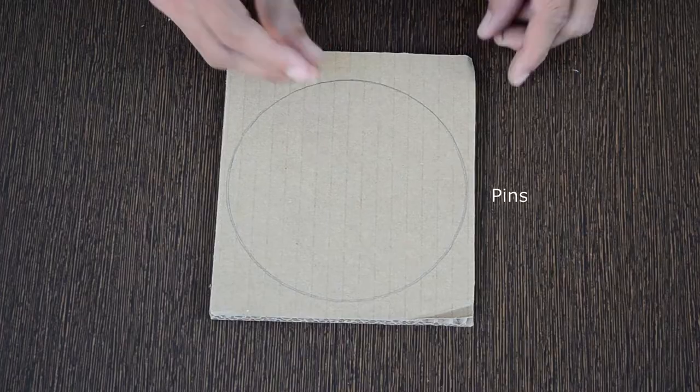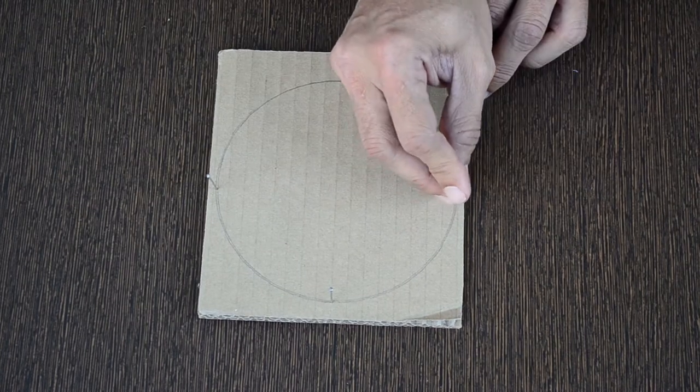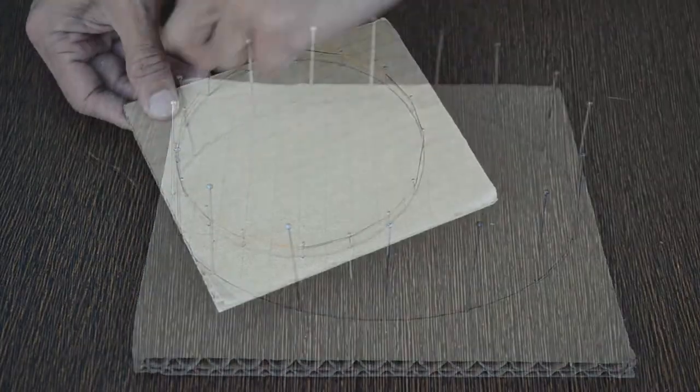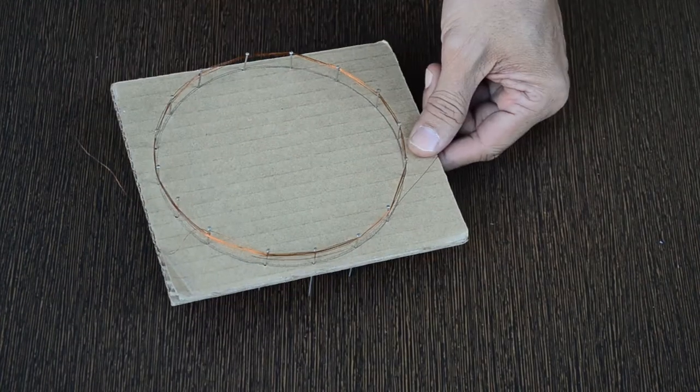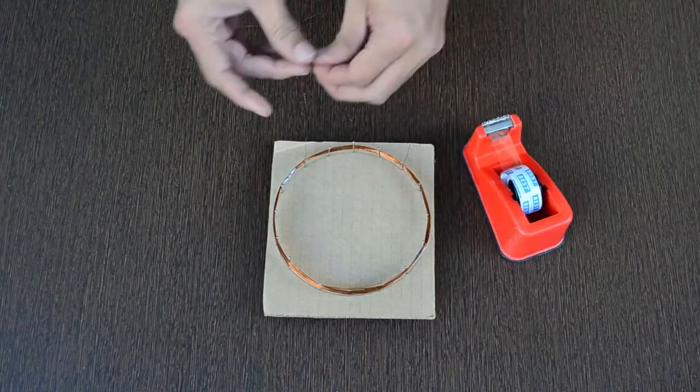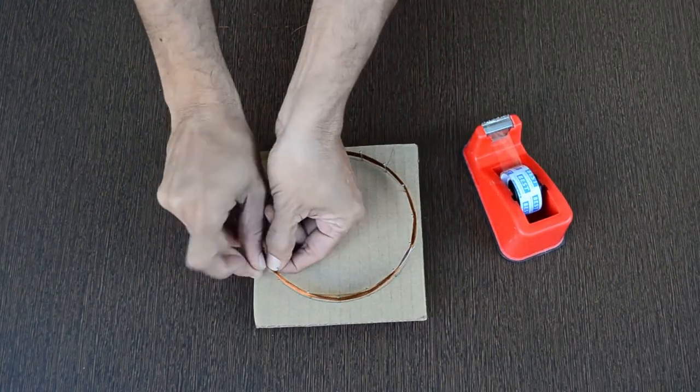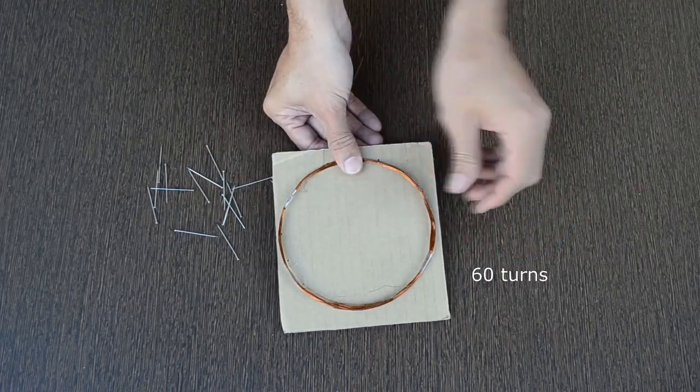Circular coil with a radius of 6 cm is made with the help of cardboard sheet and pins. Coated copper wire is bound 60 times.